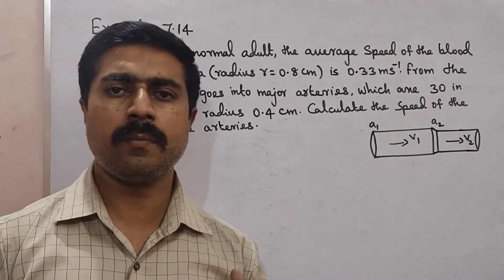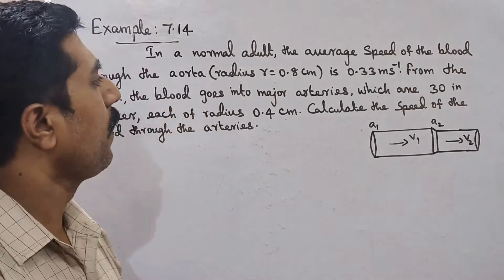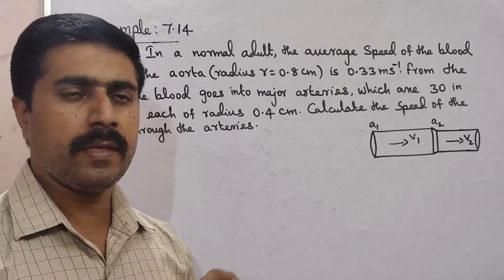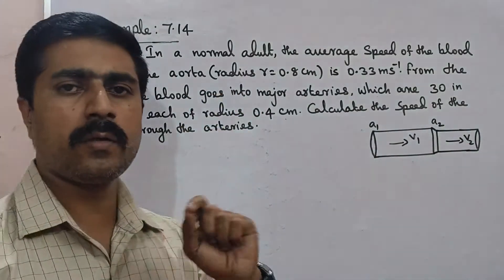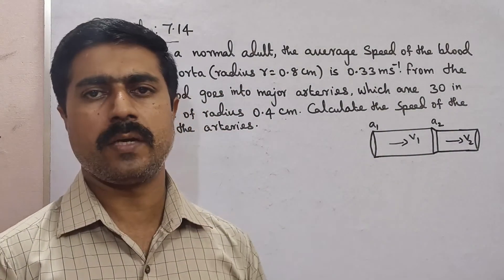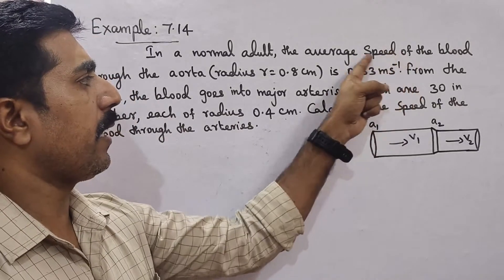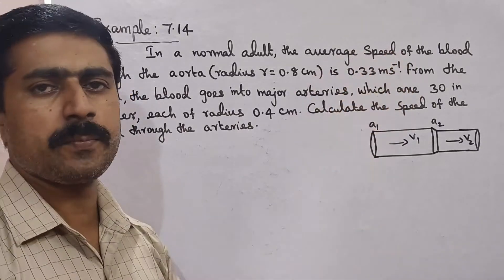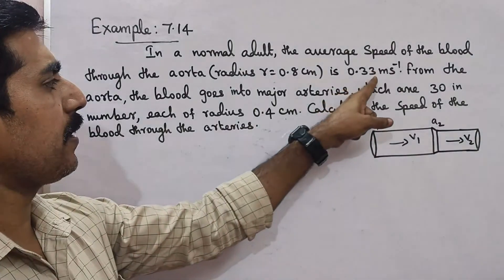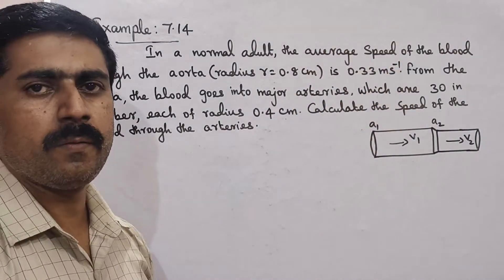A normal adult is a human. In the body, the aorta is present. The blood flows and the average speed is 0.33 m/s.